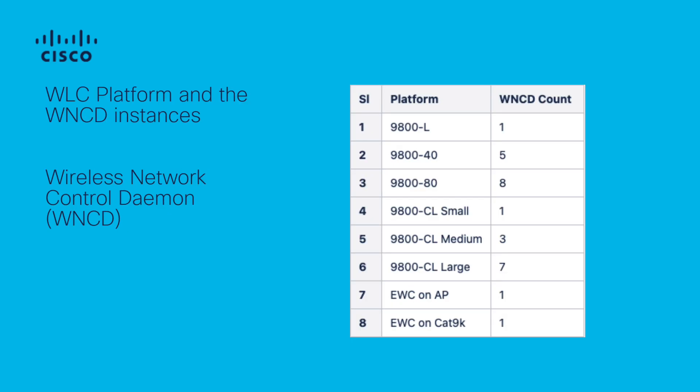One of the key processes in the wireless controller is the Wireless Network Control Daemon, also called WNCD. Depending on the 9800 platform you are using, you might see one or more instances of this process. You can refer to the table on the screen to understand the number of WNCD instances for the respective WLC platform.